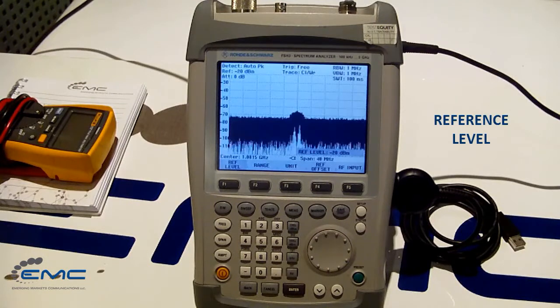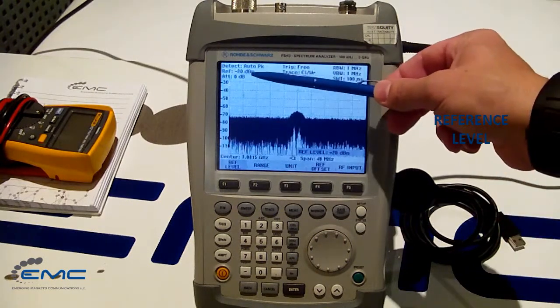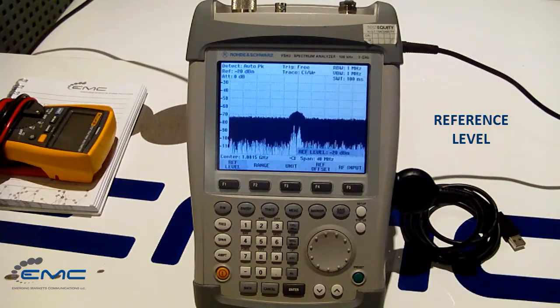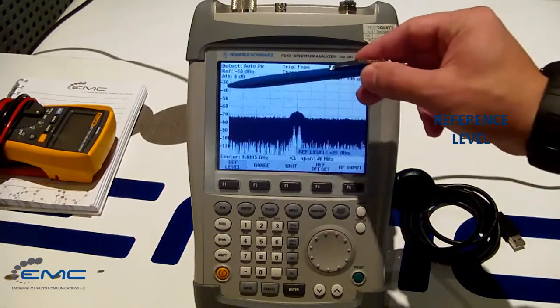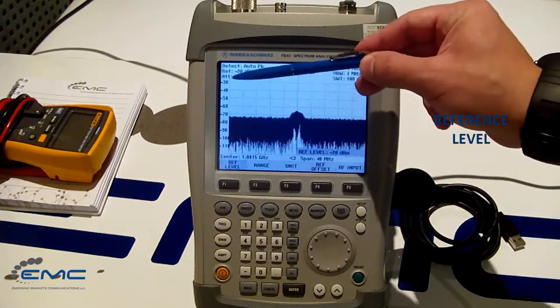Now, we have installed negative 20 dBm as reference level and our range set to 10 dB per division. So we can see that from here.